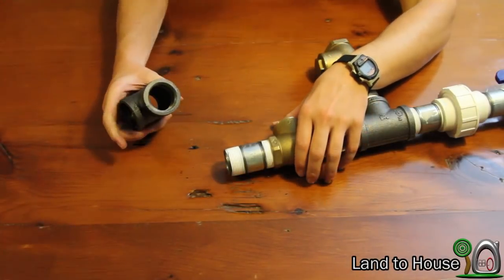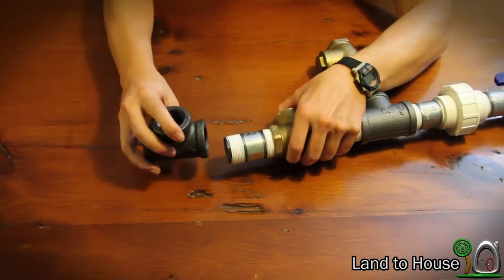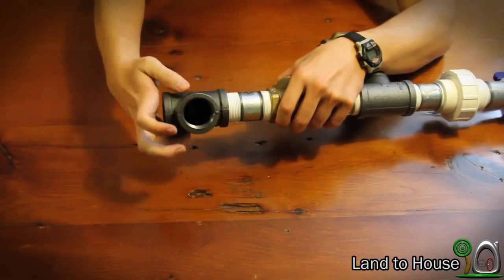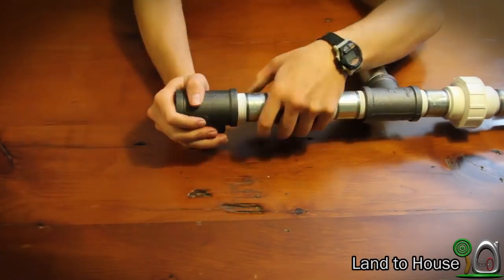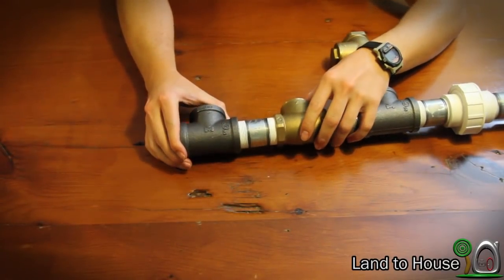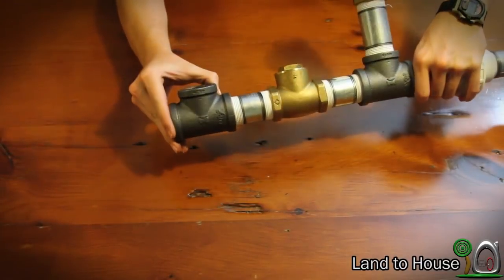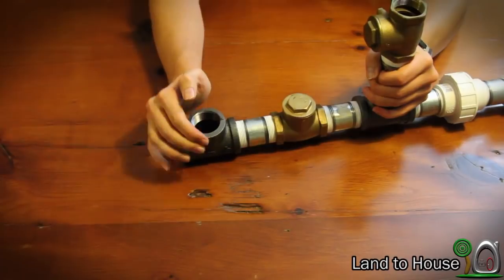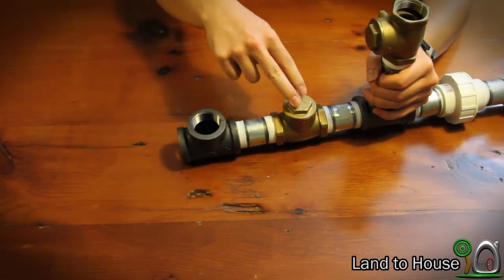Step 11. Take another threaded T and screw that into this check valve. Now you want this tight, but it also must be facing up. So when the system is turned like this, it must be facing up, just like this one was facing up.